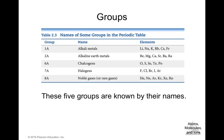Some groups have specific names. Group 1A is the alkali metals. Group 2A is the alkaline earth metals. Group 6A is the chalcogens. Group 7A is the halogens. Group 8A is the noble gases — very rare, unreactive gases. These five groups (1A, 2A, 6A, 7A, and 8A) are known by their group names.